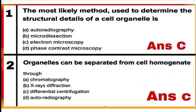Question 1: The most likely method used to determine the structural details of a cell organelle is option C, electron microscopy. It is the best device to determine the structural details of a cell. Its resolving power is one thousand times more than the light microscope.